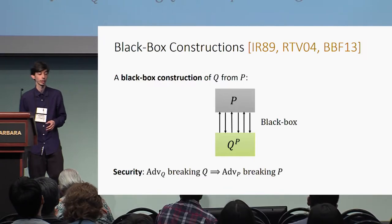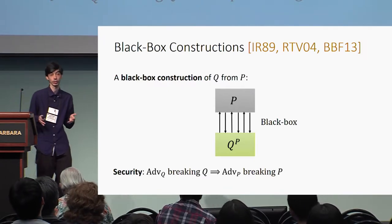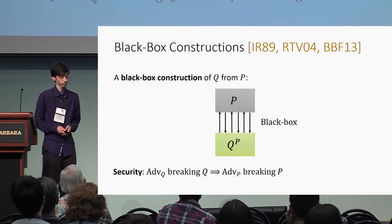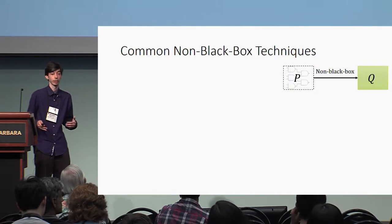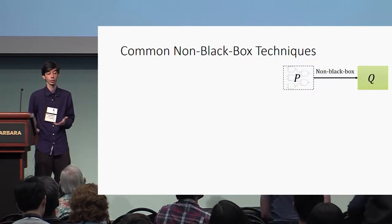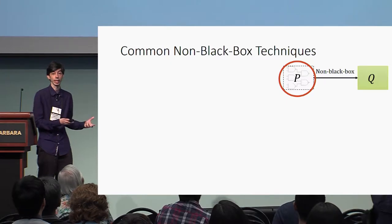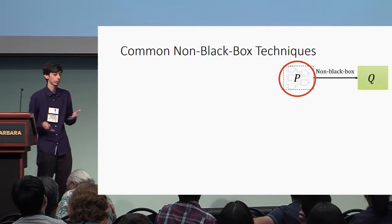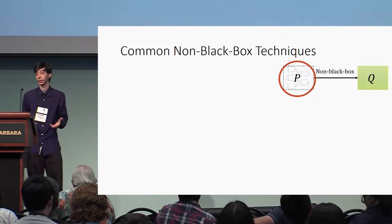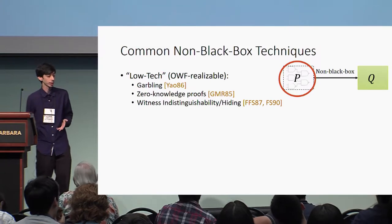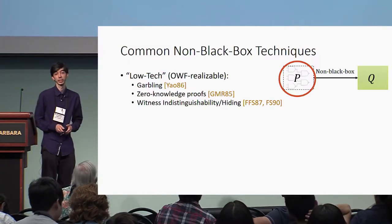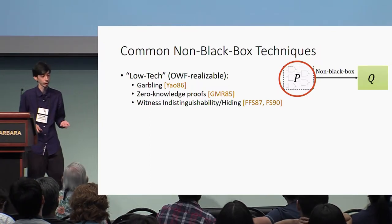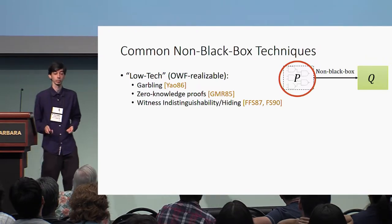In this talk we'll only be considering black box security, so the adversary can only use the underlying adversary in a black box way. When we say we have a non-black box construction of Q from P, the code of P is actually fed into the construction of Q. Informally, we can divide common non-black box techniques into two categories. The first category—low-tech non-black box techniques—are those that can be realized using a one-way function, such as garbling, zero-knowledge proofs, and witness indistinguishability proofs.